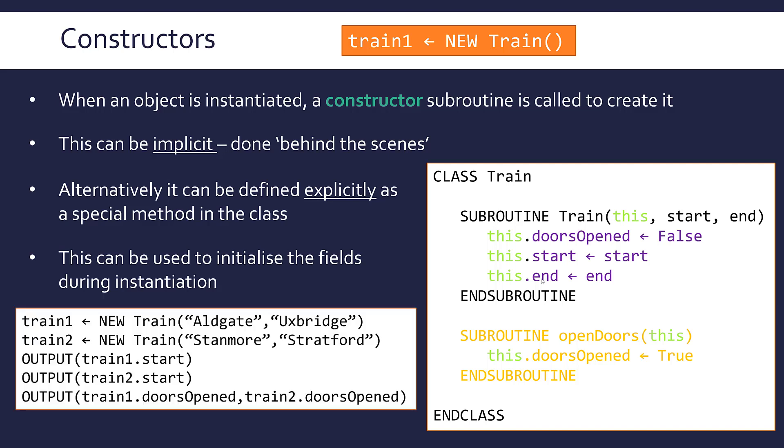If I had main code like this, I can start to make use of my constructor. The first two lines, I'm instantiating two objects, train1 and train2. Unlike, for example, at the top of the screen, this time the brackets I've supplied arguments to. My first train, I've supplied Aldgate and Uxbridge as arguments to this. I mentioned before that 'this' is sort of like a secret first argument, so we ignore that. Aldgate is really matching up to the start parameter, and Uxbridge is matching up to the end parameter. For train1, doorsOpen is set to false, like every instance, but its version of start is set to Aldgate. Its version of end is set to Uxbridge. Whereas train2 has got its start set to Stanmore and its end set to Stratford.